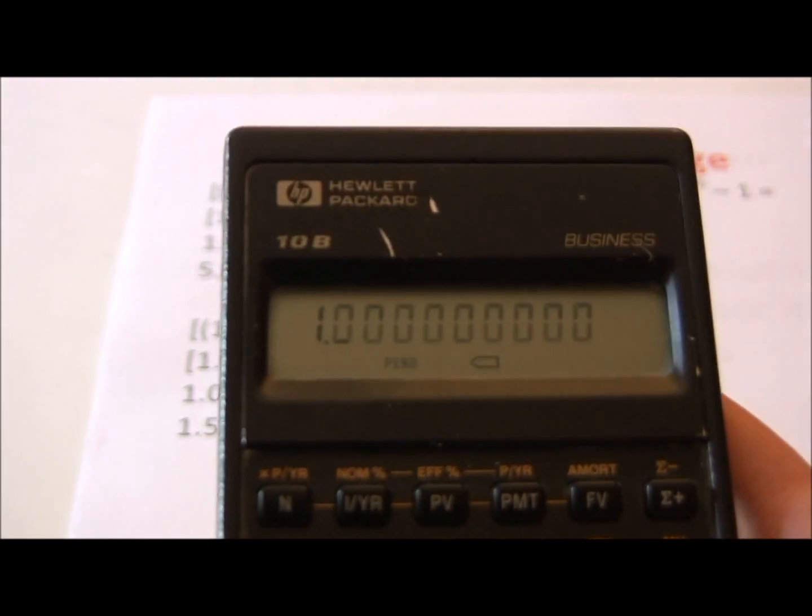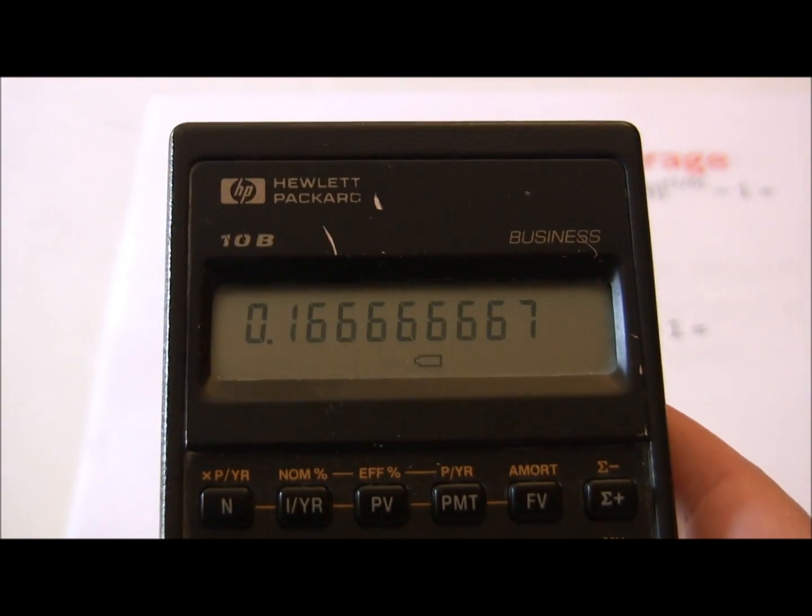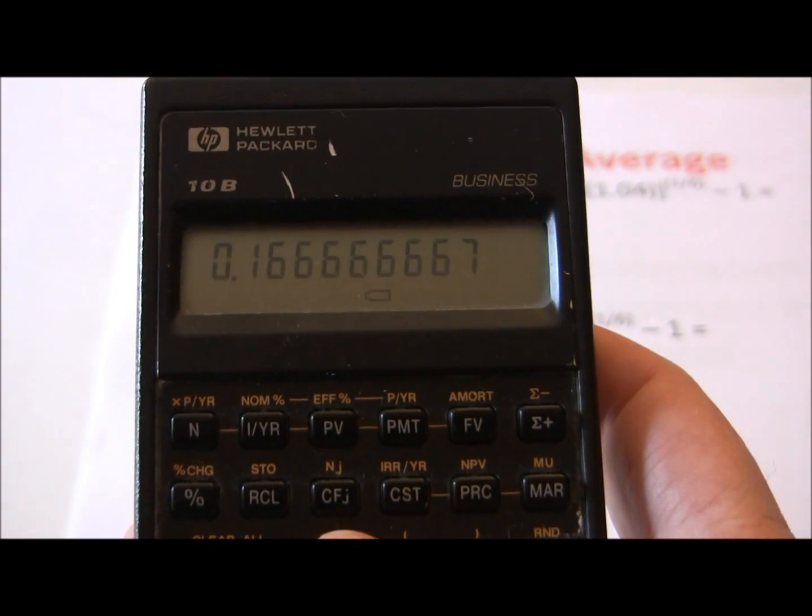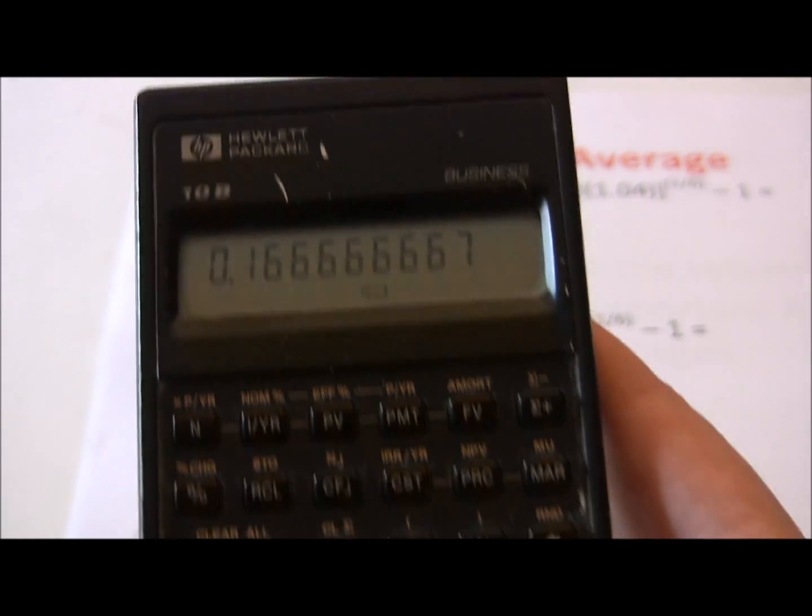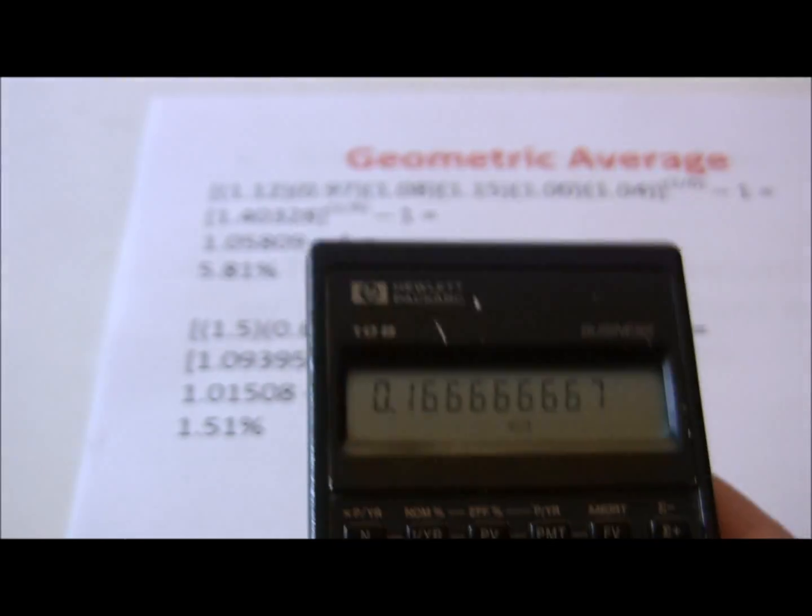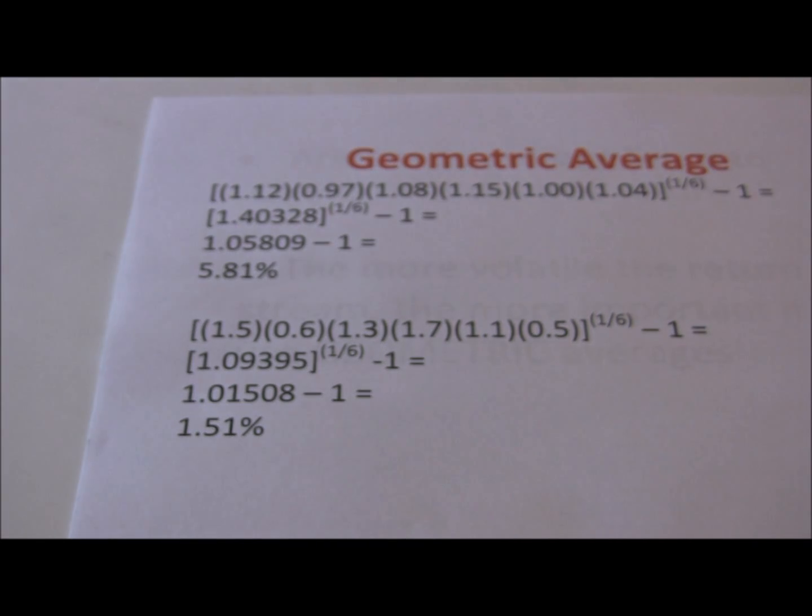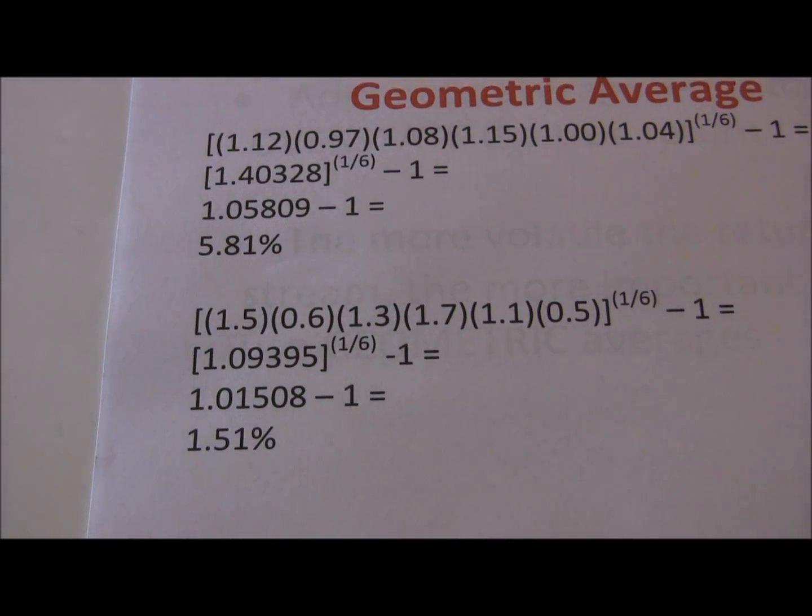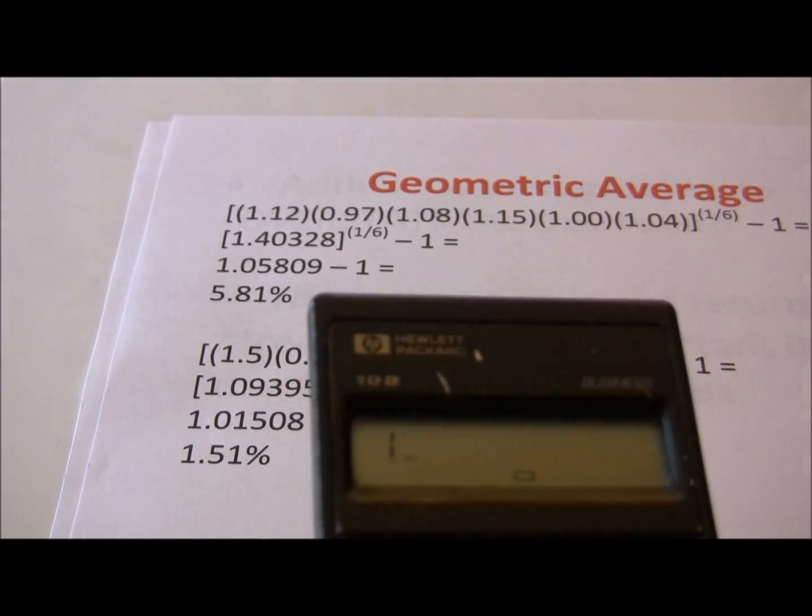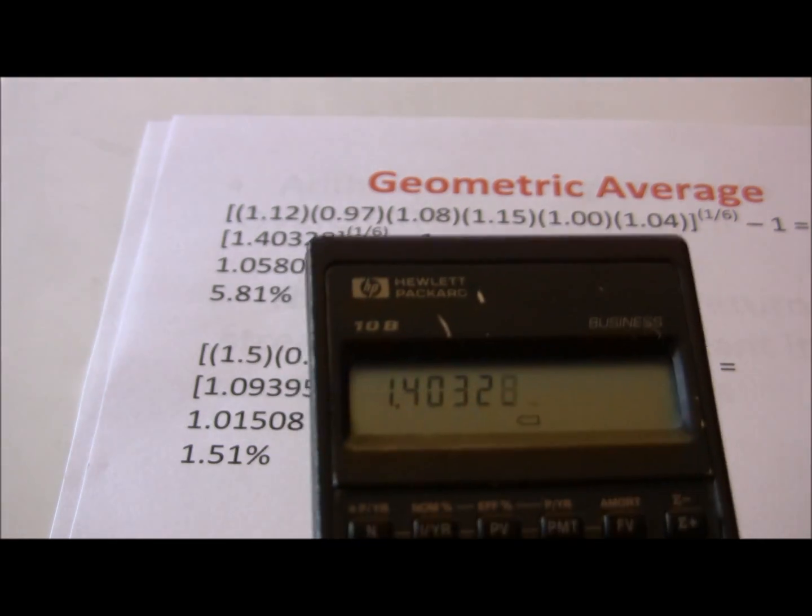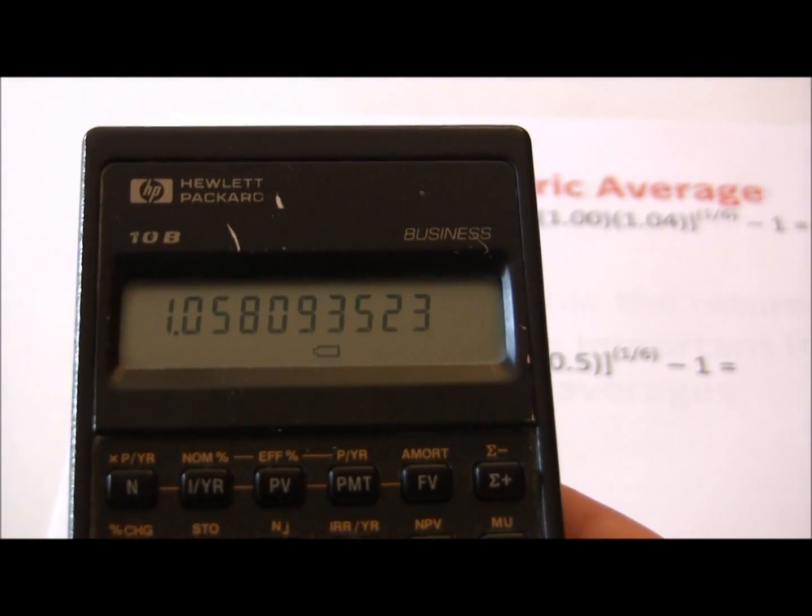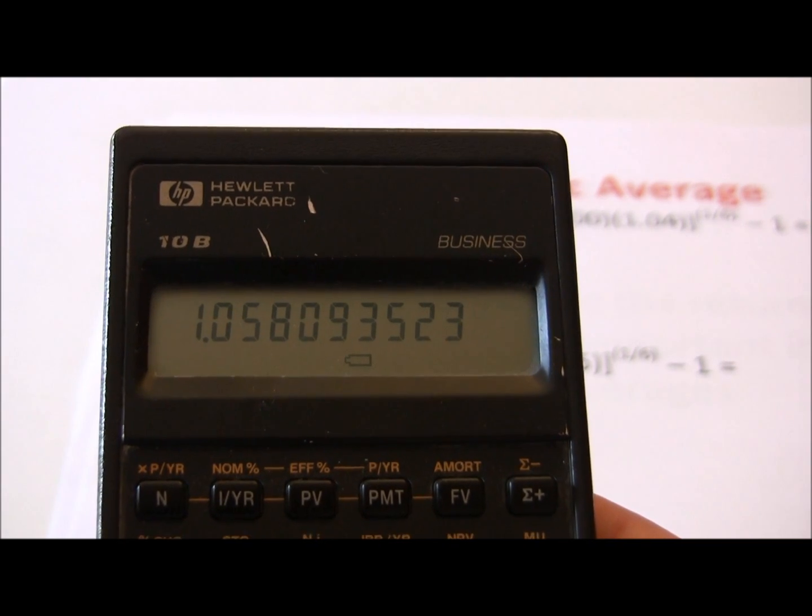Do a quick 1 divided by 6. We get .1666 repeating. I'm going to go ahead and store that in my memory here. Now I'm going to use the y to the x key. On your calculator, you should have a y to the x, or in some calculators it's an x to the y. So I'm going to take that 1.40328 that we calculated. We're going to raise that to the 1/6 power. So 1.40328, take that to the 1/6 power. Press equals. You'll see we get 1.05809.